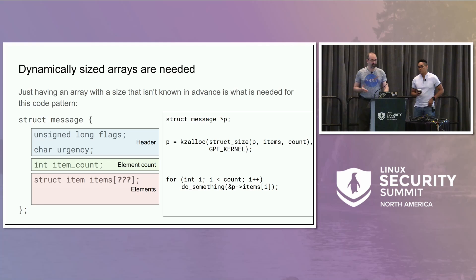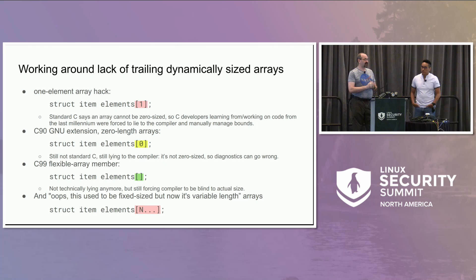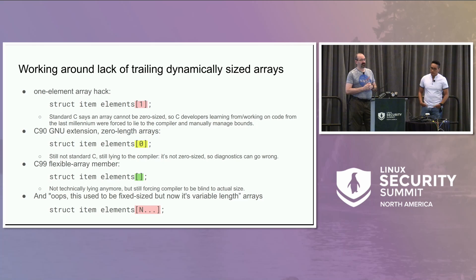So people lied about it. They said: I've got an array with one element in it, because zero is not a valid size of an array in standard C. They'd say they had one element and continued to use many elements off the end, way beyond the single element. This had all kinds of problems. In 1990, the GNU extension said they'd allow zero length, as at least a notable extension distinct from standard C.